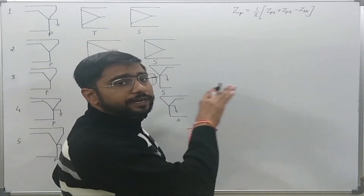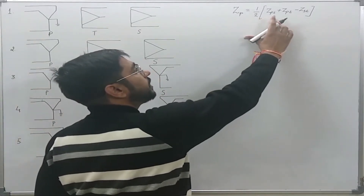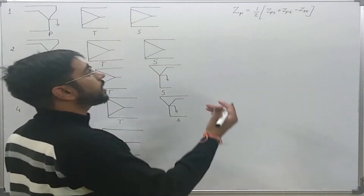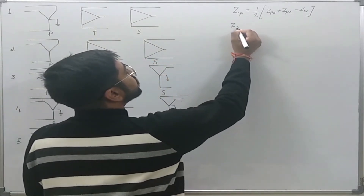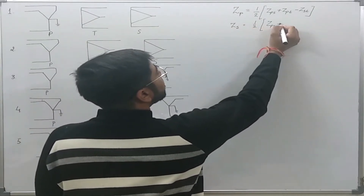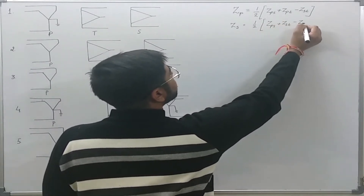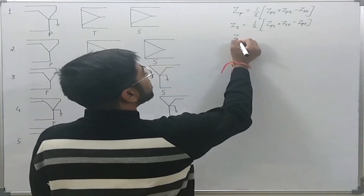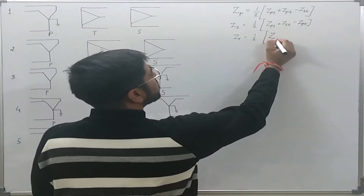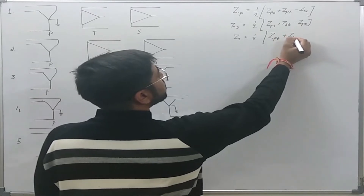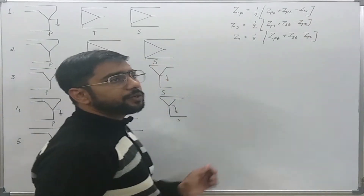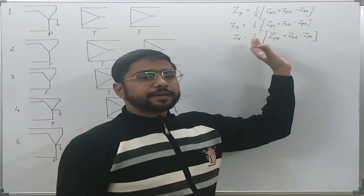All three impedance values should be on the same voltage level and the same volt-ampere base. Similarly, Zs was found to be one-half times (Zps + Zst − Zpt), and Zt was found as one-half times (Zpt + Zst − Zps).